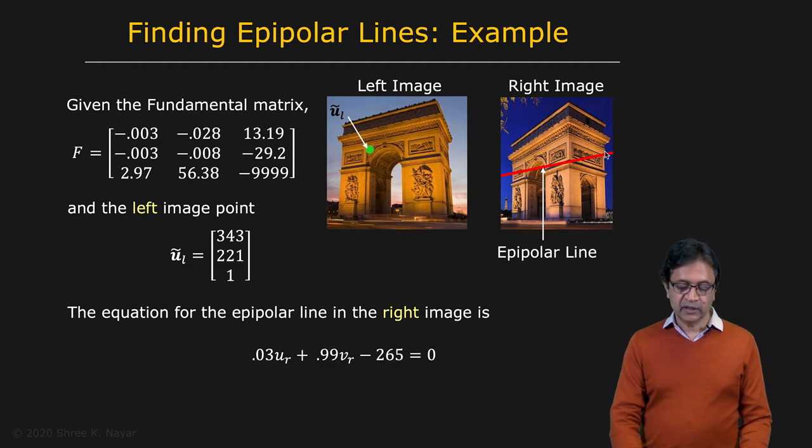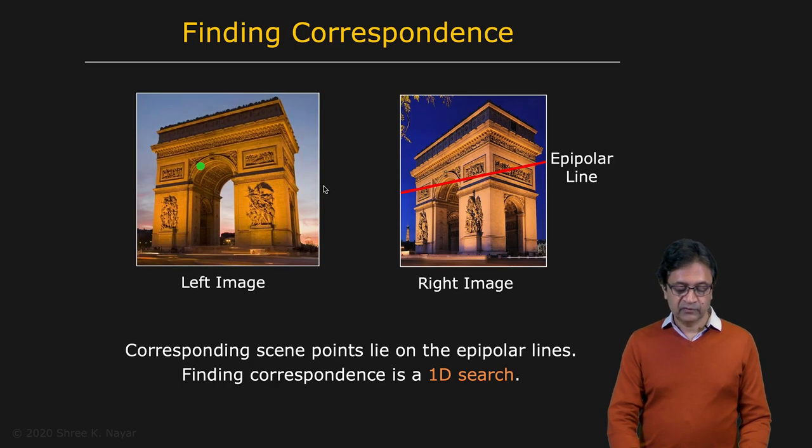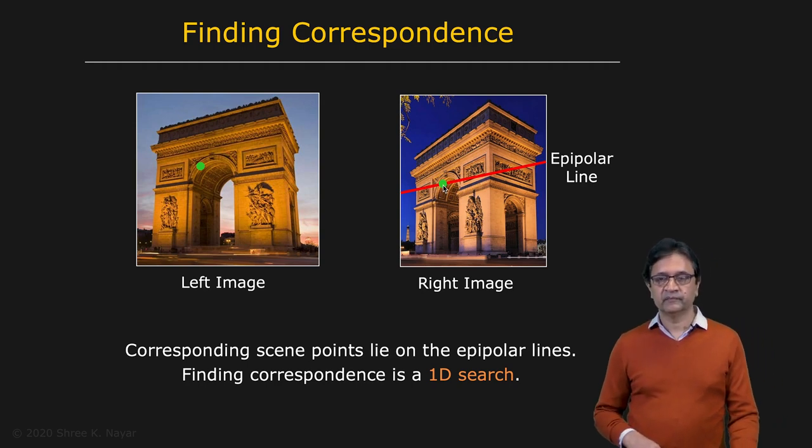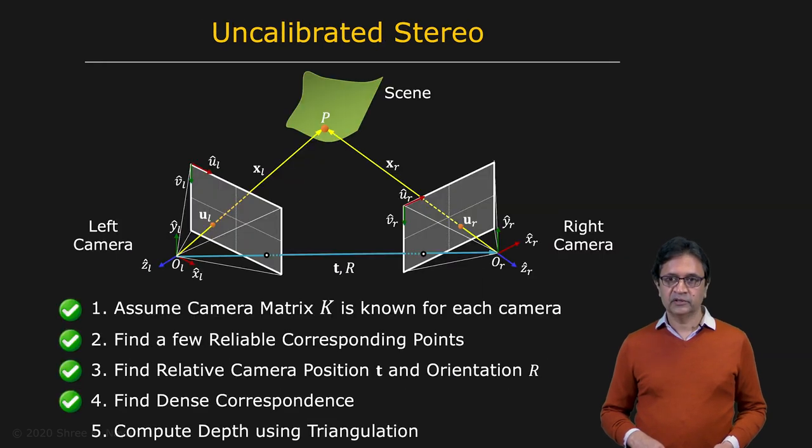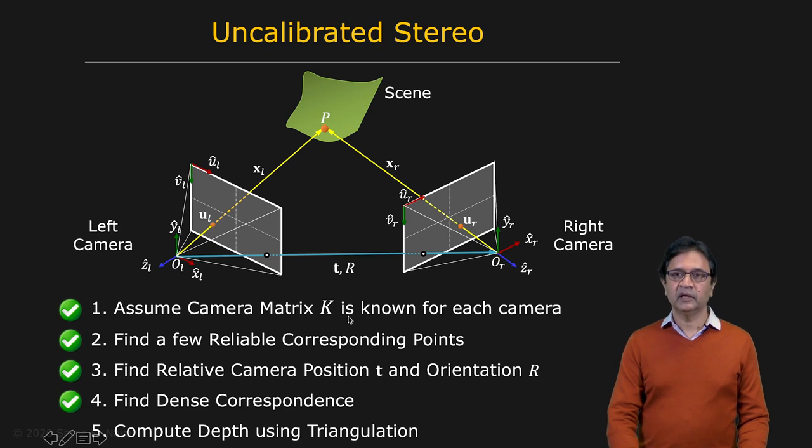So what that means is that now if you want to find the matching point for this point in the left image in the right image, you would take a little window around it and apply template matching along this red line and find the point where you get the best match. So that is finding correspondences and that brings us to the last step in our stereo process.